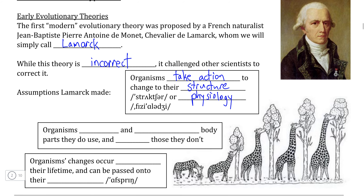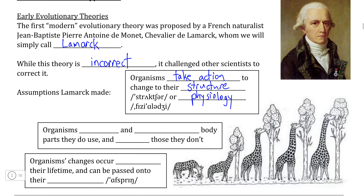Where Lamarck was proven incorrect, however, is that just because organisms can exert some sort of change on their structure and physiology during their lifetime, this does not automatically mean that those characteristics are passed on to an organism's offspring — because evolution is not simply looking at how organisms can undergo structural and physiological changes during their lifetime, but how those characteristics are passed on across generations.